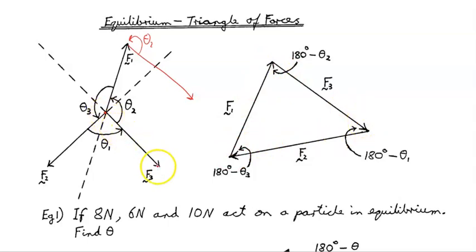So if I take F3 and I shuffle it up the page like that, parallel to itself, and I attach it to the end of F1, this angle theta 2 just gets shifted up here. It doesn't change. The angle between F1 is going this way, and F3 is going this way, just as we've got here. So this angle up here, in there, is theta 2.